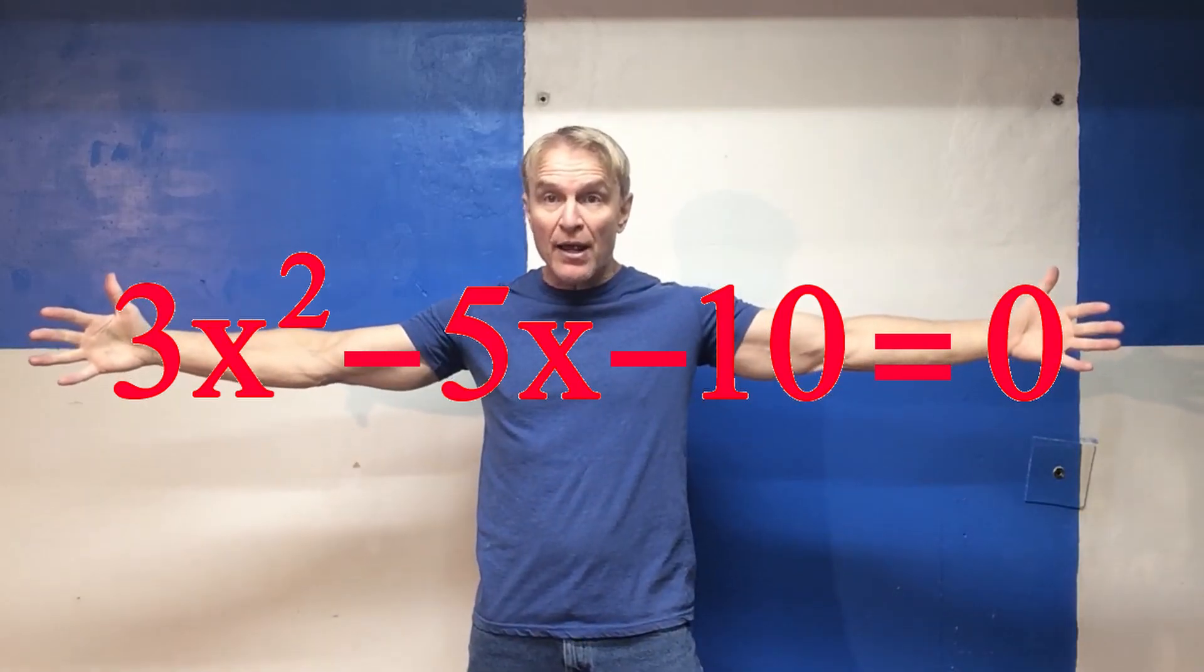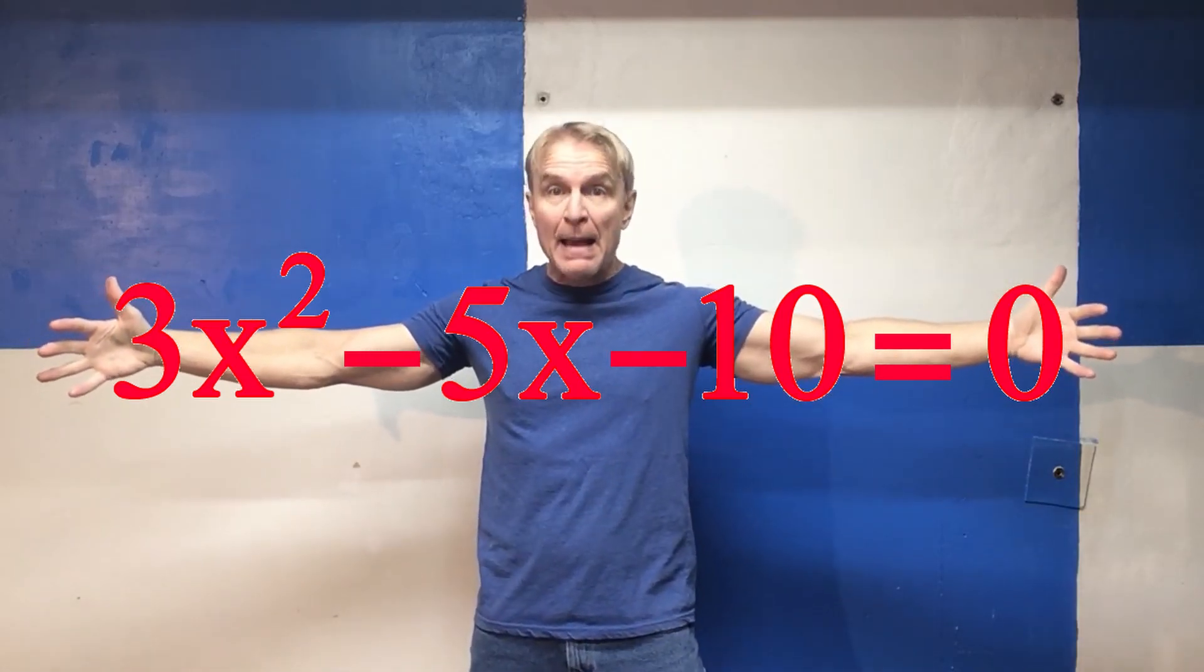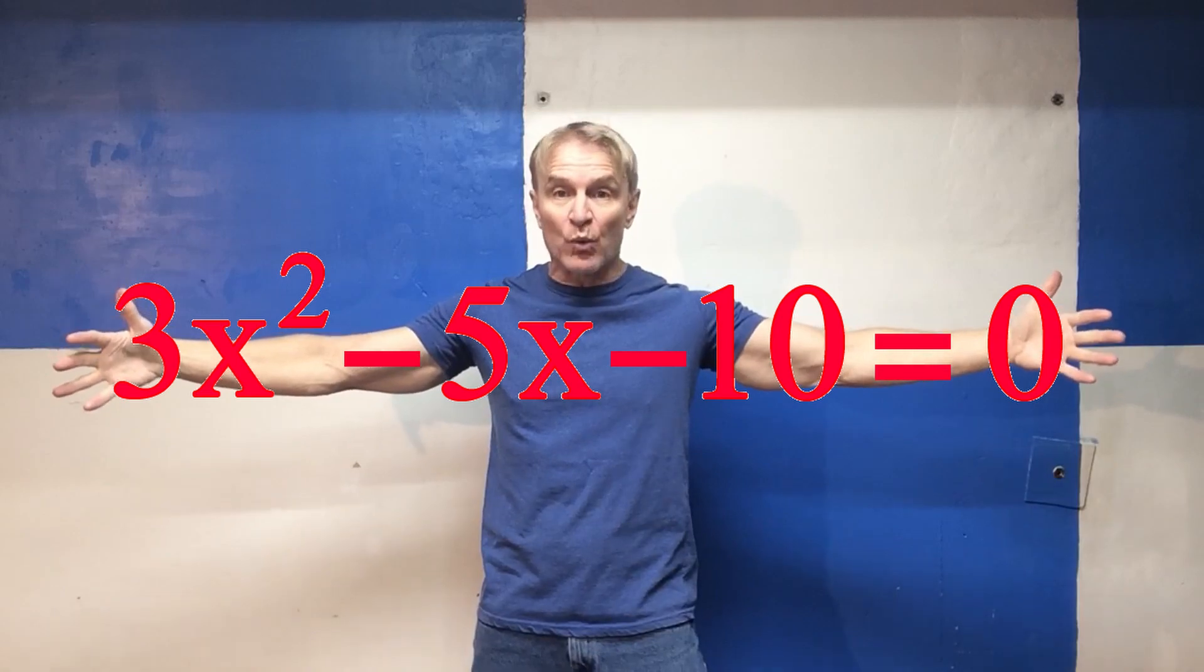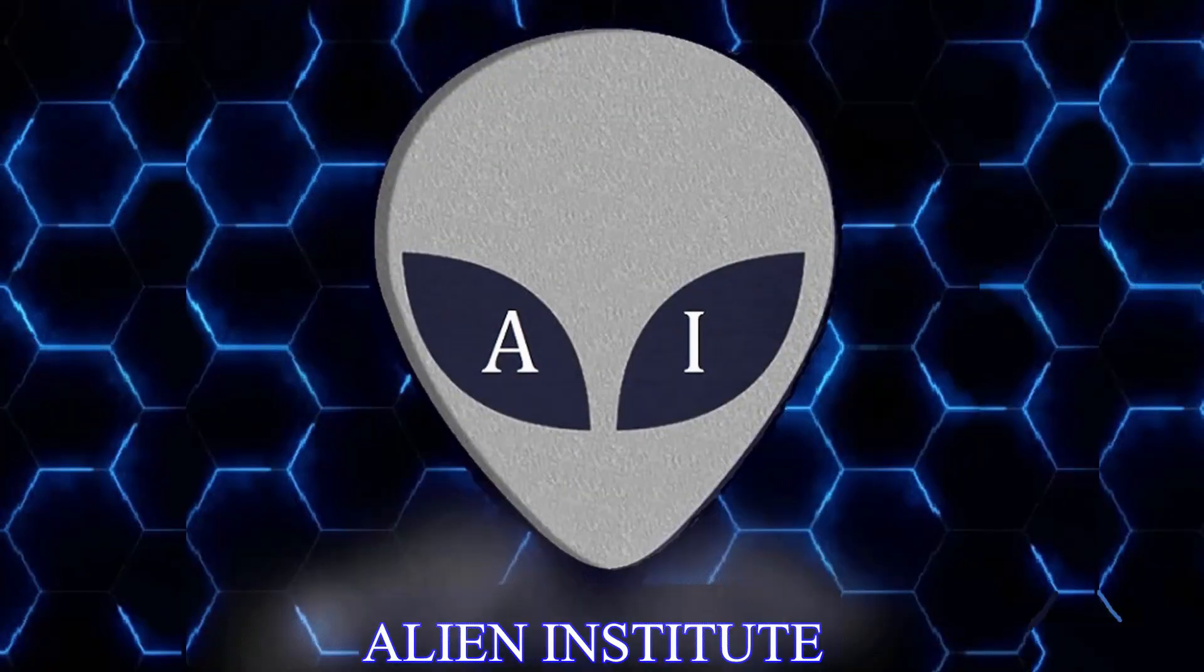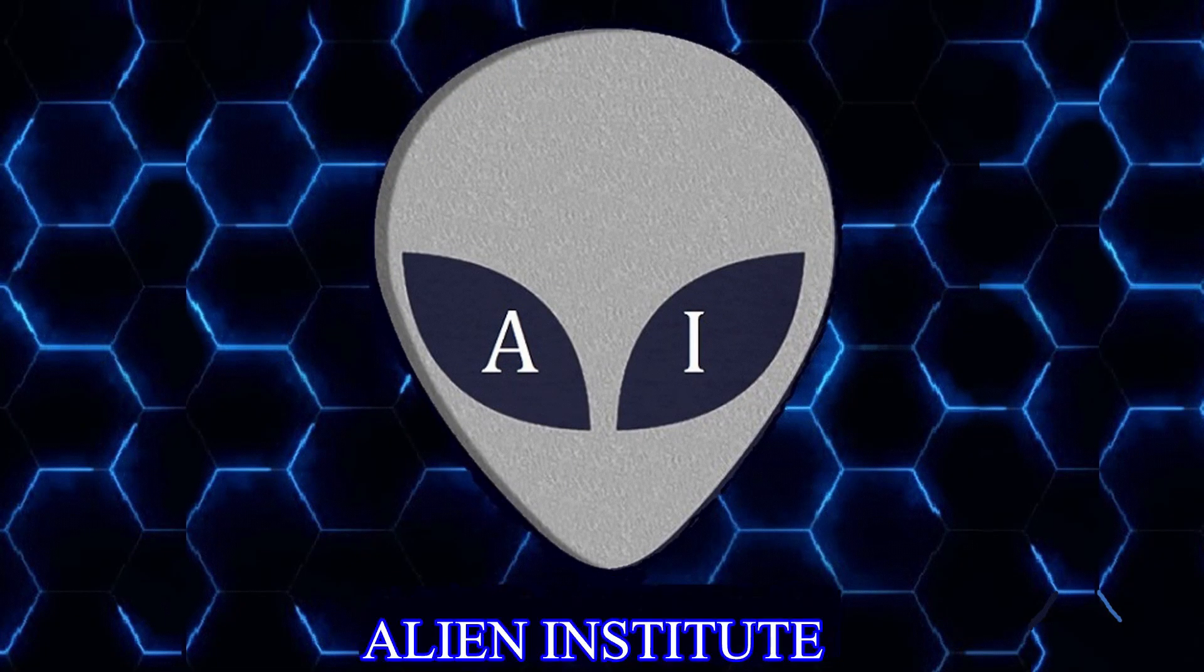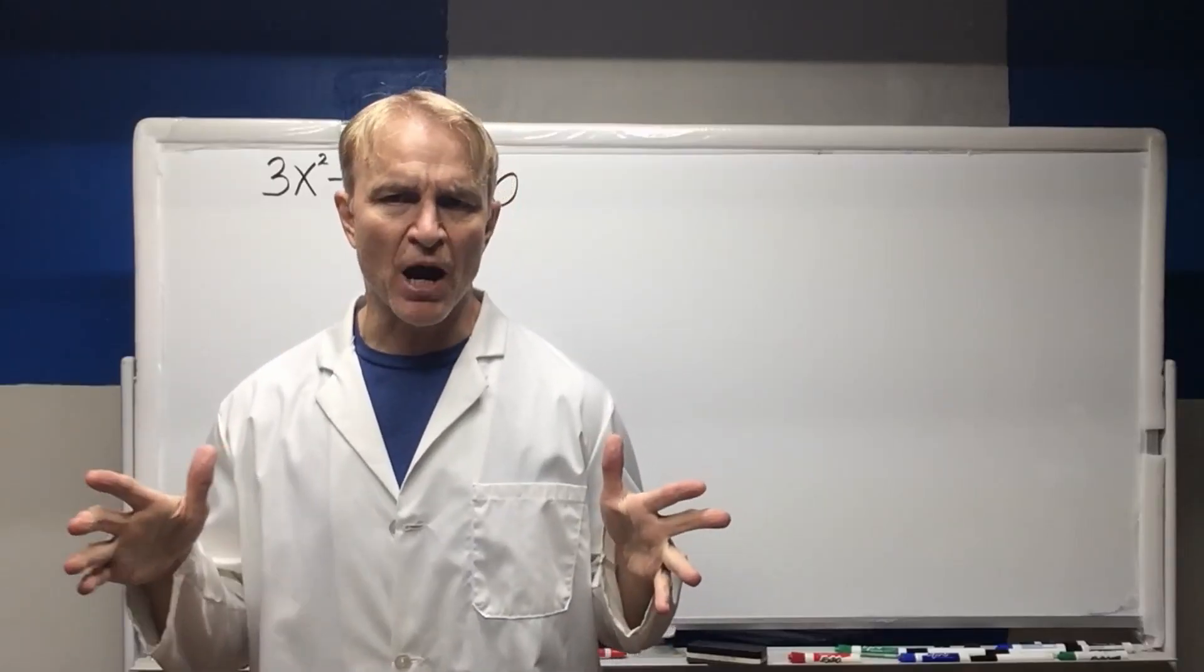We are going to solve 3x squared minus 5x minus 10 equals 0 at lightning speed. Okay let's roll over this problem.